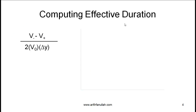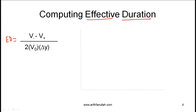Now we are going to talk about computing effective duration, which we saw earlier in the reading on risks of investing in fixed income securities. The formula is extremely important: effective duration equals (V minus − V plus) / (2 × V₀ × ΔY). You need to understand exactly what these terms mean and how to calculate them.